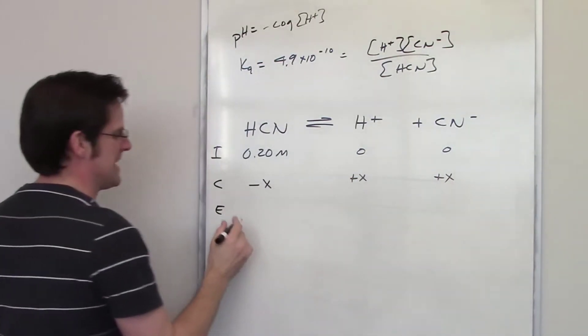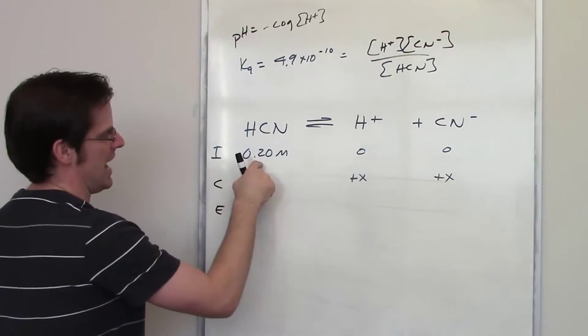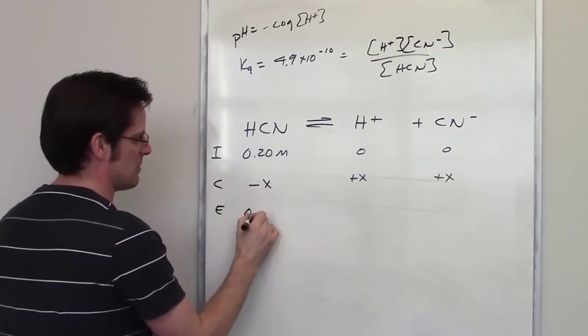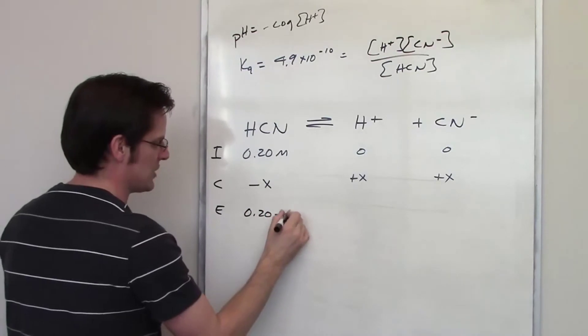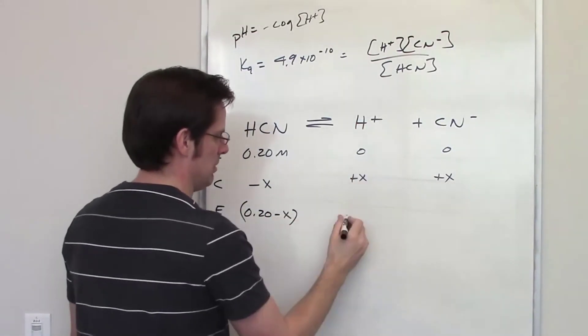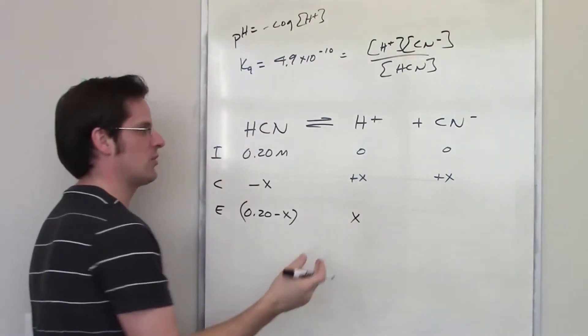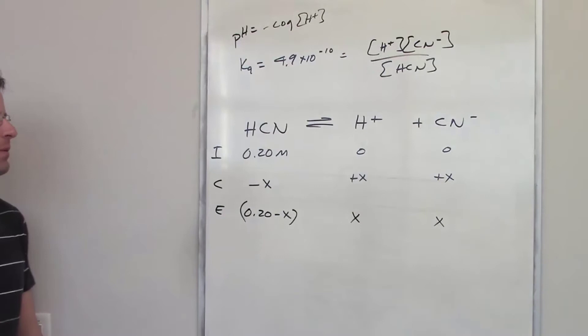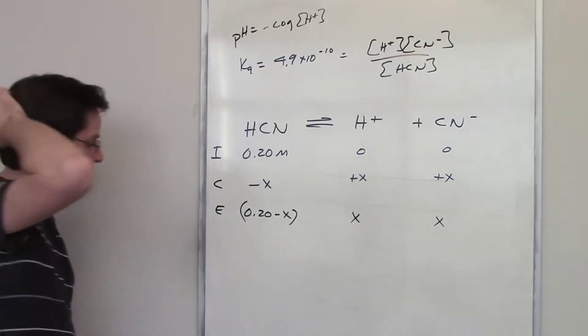What's the final concentration going to be at equilibrium? Well all I do is add the first row to the second row. So the final concentration of HCN is going to be 0.2 minus X. The final concentration of this is going to be zero plus X or just X. The final concentration of this will also be the same. That's our ICE table. We good? Hopefully we are.